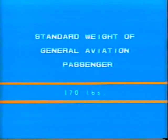FAR 91.5 requires that you check all these conditions. It is possible that in several models of general aviation aircraft with all seats filled, baggage at capacity, and full tanks, the maximum takeoff weight may be exceeded. The FAA has a schedule of standard weights: the standard weight of a general aviation passenger is given as 170 pounds. An aircraft designed to carry six 170-pounders with full fuel and baggage could be well over gross if you loaded six 200-pound passengers without offloading some fuel or baggage.